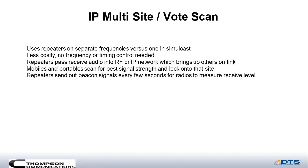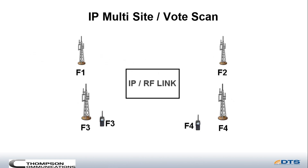Repeaters will send out a beacon signal every few seconds for the radios to lock into. In this example you can see a couple of portable radios at the bottom of the screen — each one has already measured the signal strength and locked onto the closest site. As the F3 portable starts to move through the coverage area, you can see it's transitioned over to F1 because it's closer to that tower site.